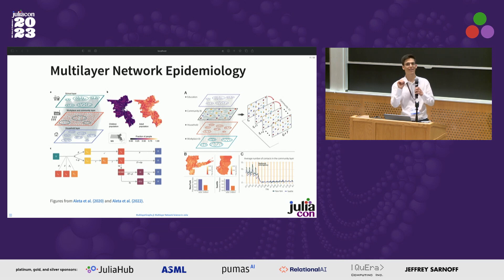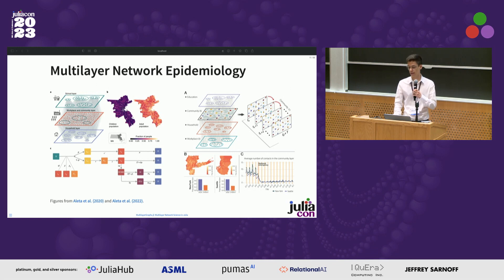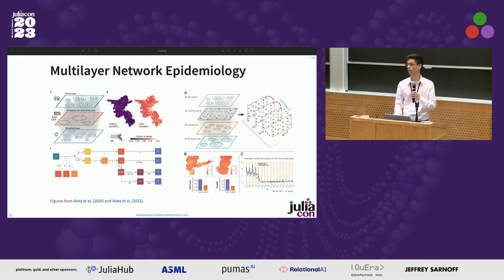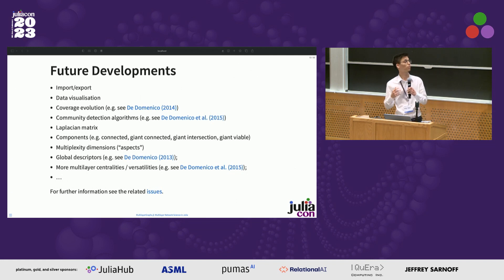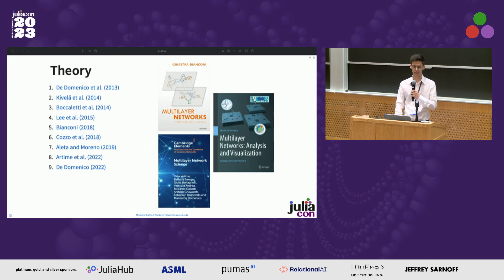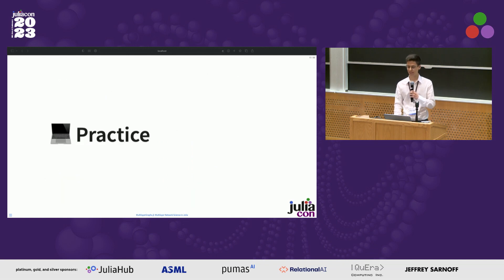It turns out from the literature that explicitly modeling human contact networks — taking into account the stratification into different locations and settings of human interactions — is crucial to perform well on infectious disease epidemiological tasks, like short-term individual and ensemble forecasts, nowcasting procedures, or individual and ensemble prospective scenario analysis. Regarding limitations of the current package version: we need to add import/export functionality for multilayer network data types, add data visualization — which may be a new package or an extension of GraphMakie.jl. Let's now hand over to Claudio for the tutorial.